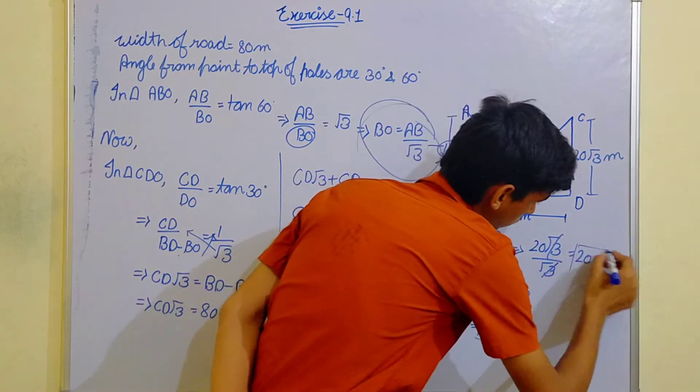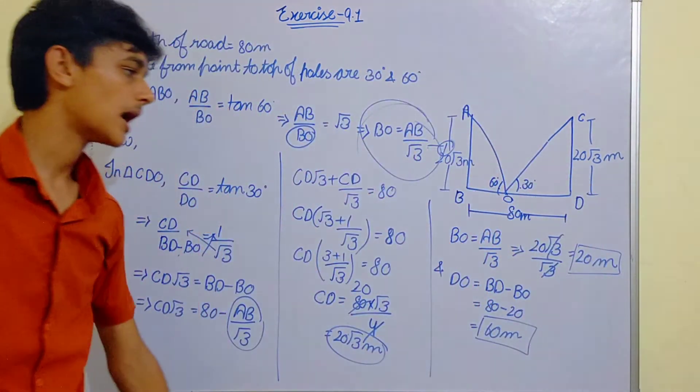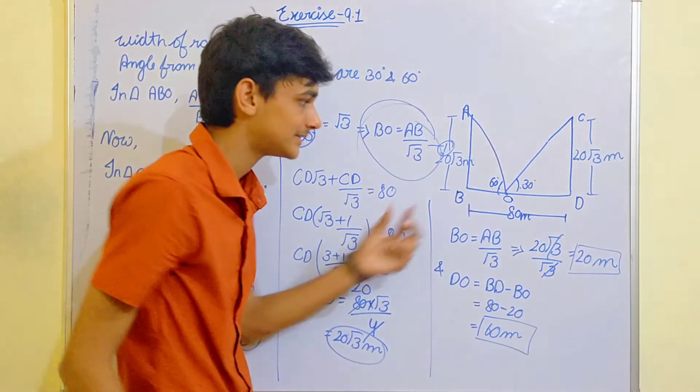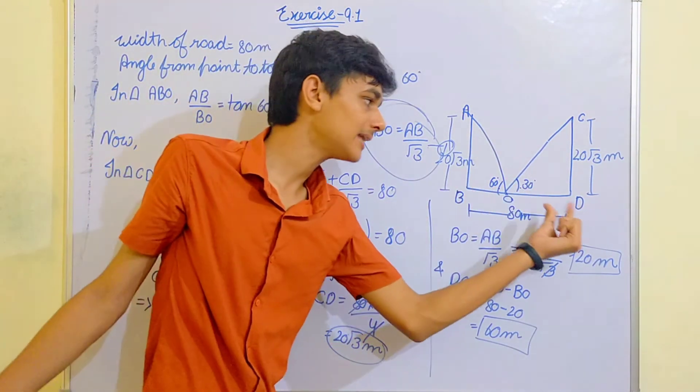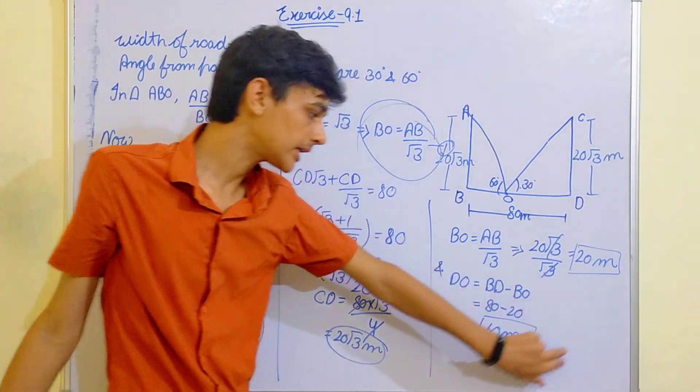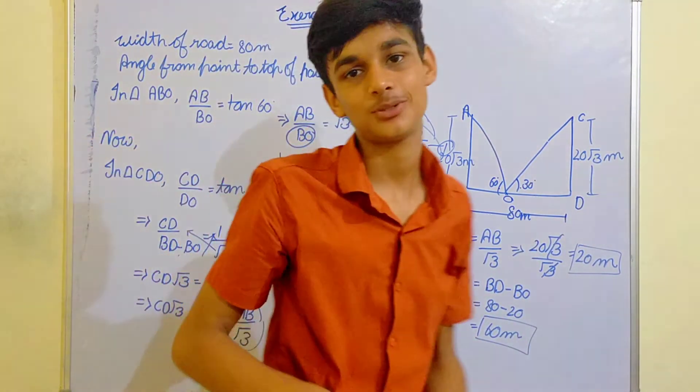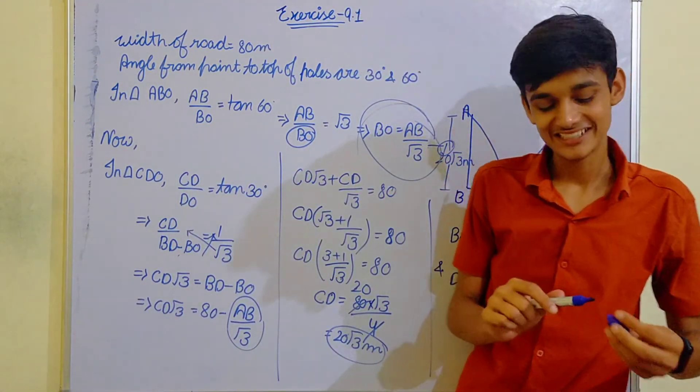So, it's our answer. So we found out 3 things guys. First, height of the pole. Second, this distance. And third, this distance. So, 3 answers. That's it, question is done.